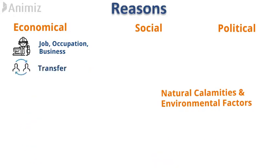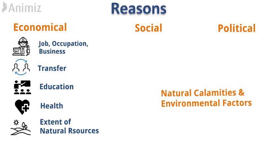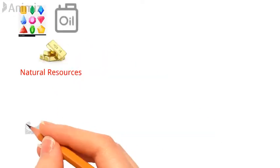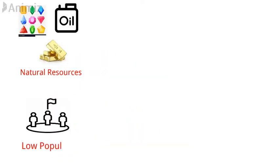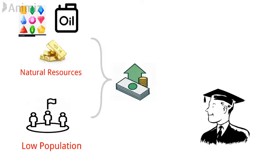The second economic reason is transfer — if a person gets a transfer from a job, he is compulsorily required to migrate. Third is education: if a person is not able to get proper education facilities, then for better education he has to migrate to another place. Fourth is health: if a person is unable to get proper health-related facilities, he has to migrate to an urban area to access ultra-modern health facilities. Fifth is extent of natural resources — there are some places where natural resources are available in huge quantity but population is very low, so people prefer to migrate to such places in search of better economic opportunities.